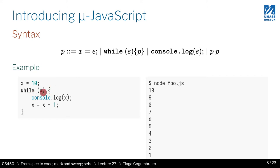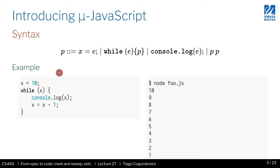Since we don't have booleans, the loop condition is based on whether x becomes 0 — that represents false, so the loop ends. If x is different than 0, which is true JavaScript semantics, that's considered true and evaluation continues.